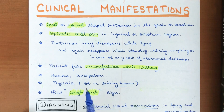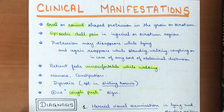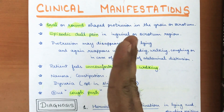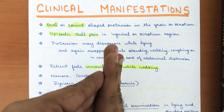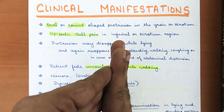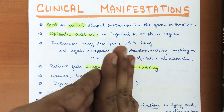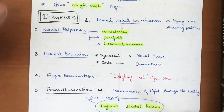There may also be nausea, constipation, and dysuria — especially in sliding hernia when the bladder is involved, causing difficulty or pain in urination. A characteristic positive cough push sign is present: when the examiner palpates the hernial sac area and asks the patient to cough, the increase in intra-abdominal pressure causes the hernial sac to protrude outward, pushing against the examiner's fingers.